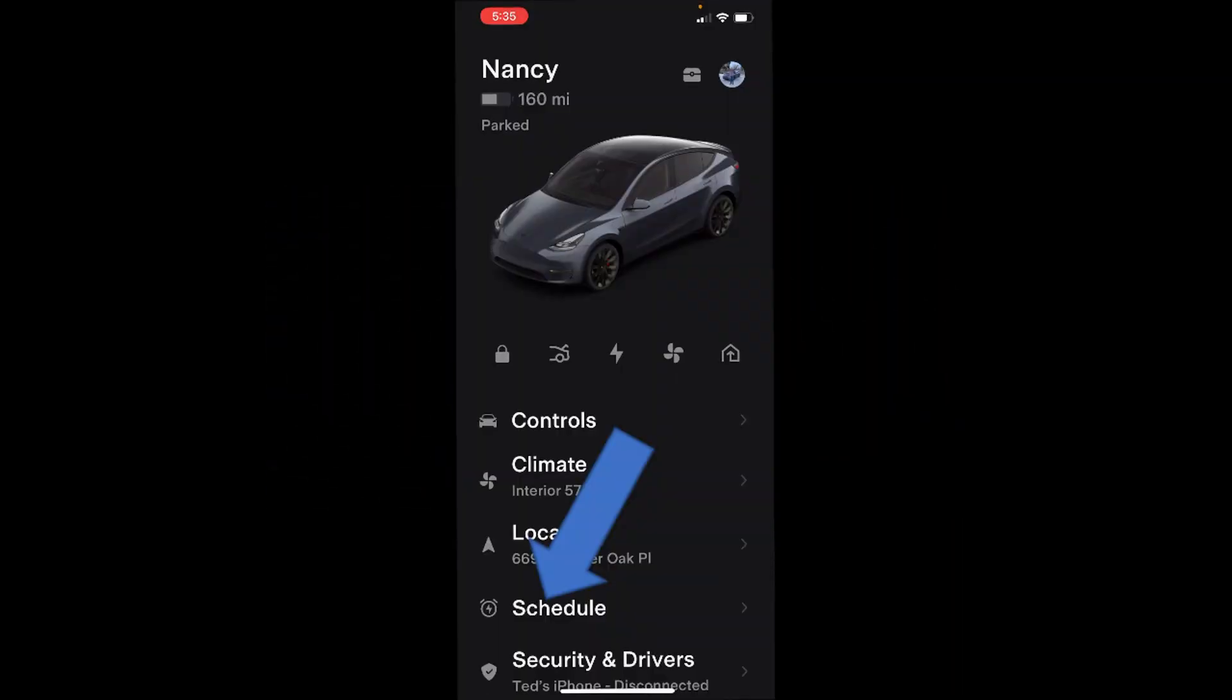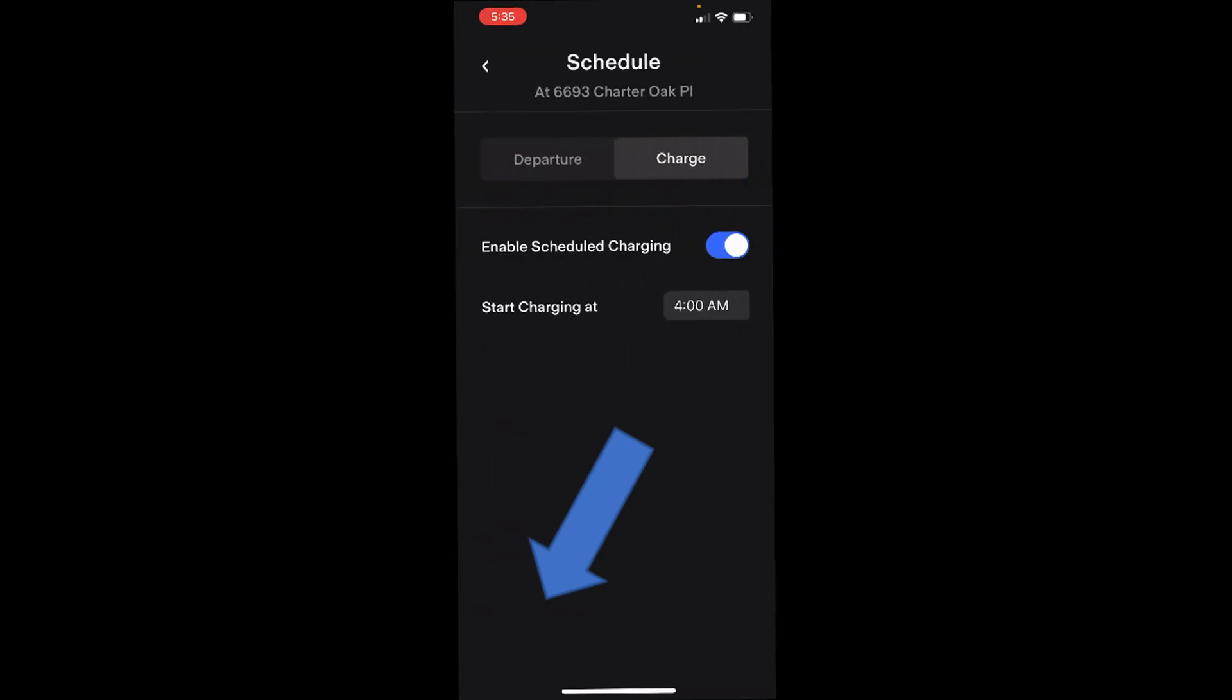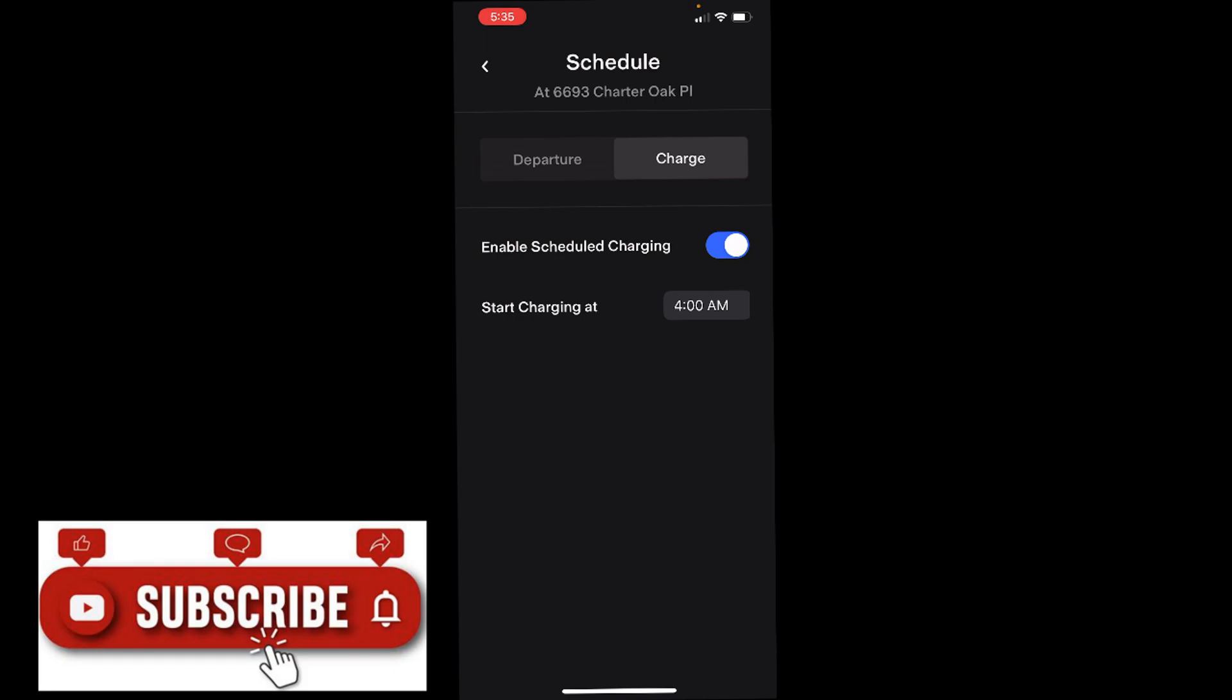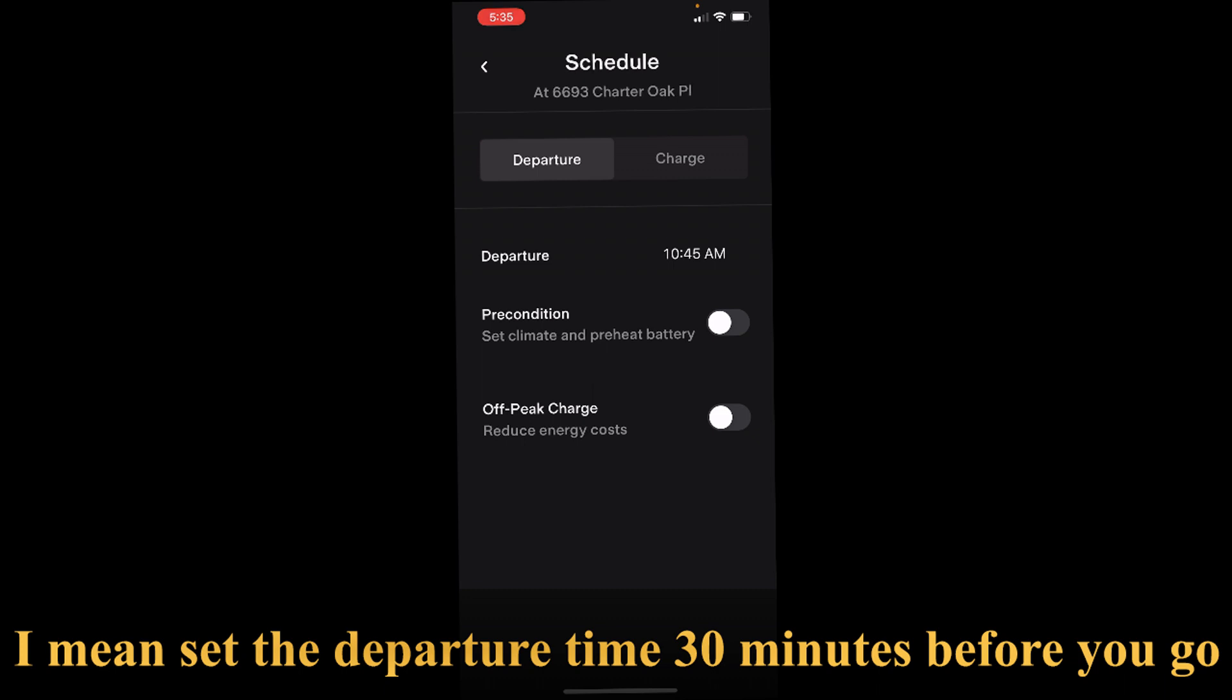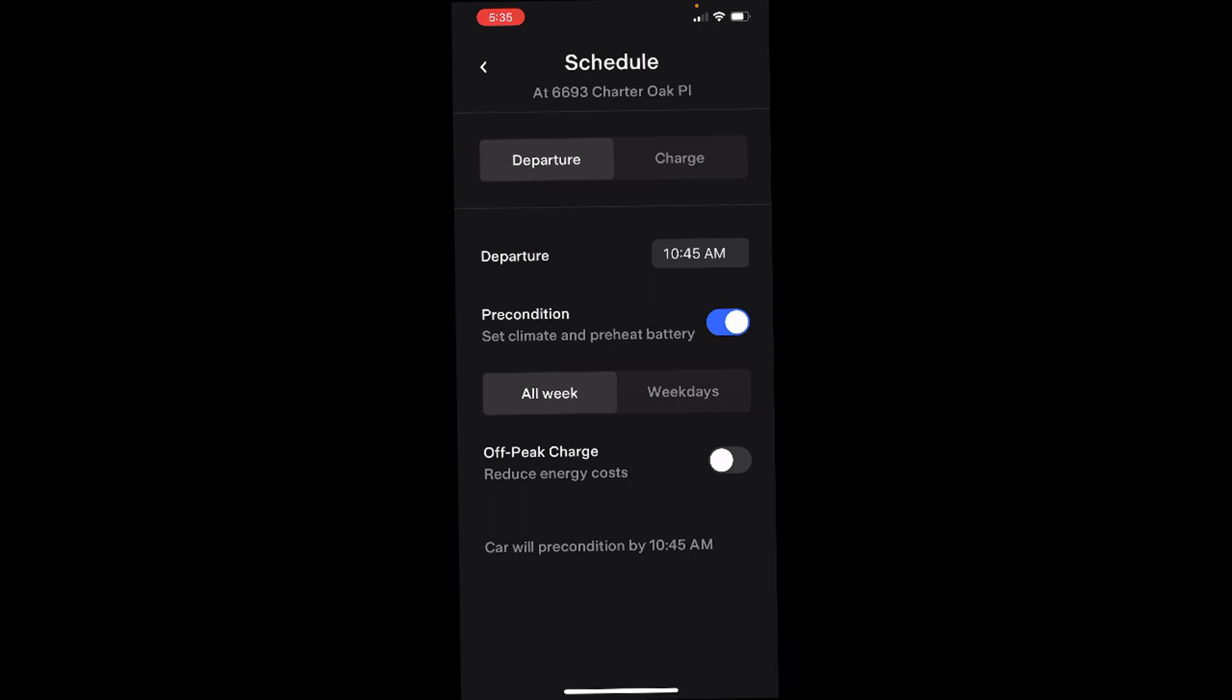To precondition your battery is very straightforward. The easiest way to do it is just go under schedule and then make sure you select departure, and then set the departure time about 30 minutes after you're going to leave. Then you just slide that preconditioned battery over. What that will do is make sure the battery is warm, so before you leave it will be as efficient a drive as possible in the colder weather.